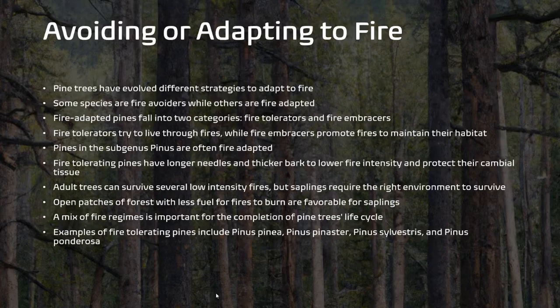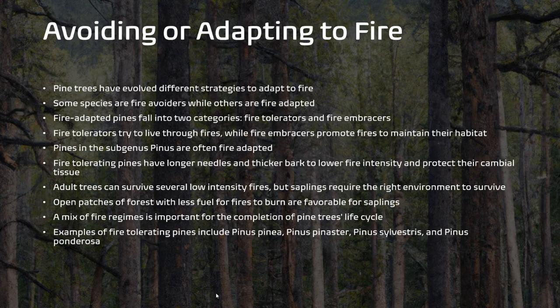Pine trees have developed different adaptations to cope with fire, with some being fire avoiders while others are fire-adapted. Fire-adapted pines fall into two categories: fire-tolerators and fire-embracers. Fire-tolerators try to survive fires, while fire-embracers promote fires to maintain their habitat. Pine trees in the subgenus Pinus are often fire-adapted, with fire-tolerating pines having longer needles and thicker bark to lower fire intensity and protect their cambial tissues. Adult trees can survive several low-intensity fires, but saplings require the right environment to survive, often in open patches of forest with less fuel. A mix of fire-adapted genes is important for completion of pine trees' life cycle.